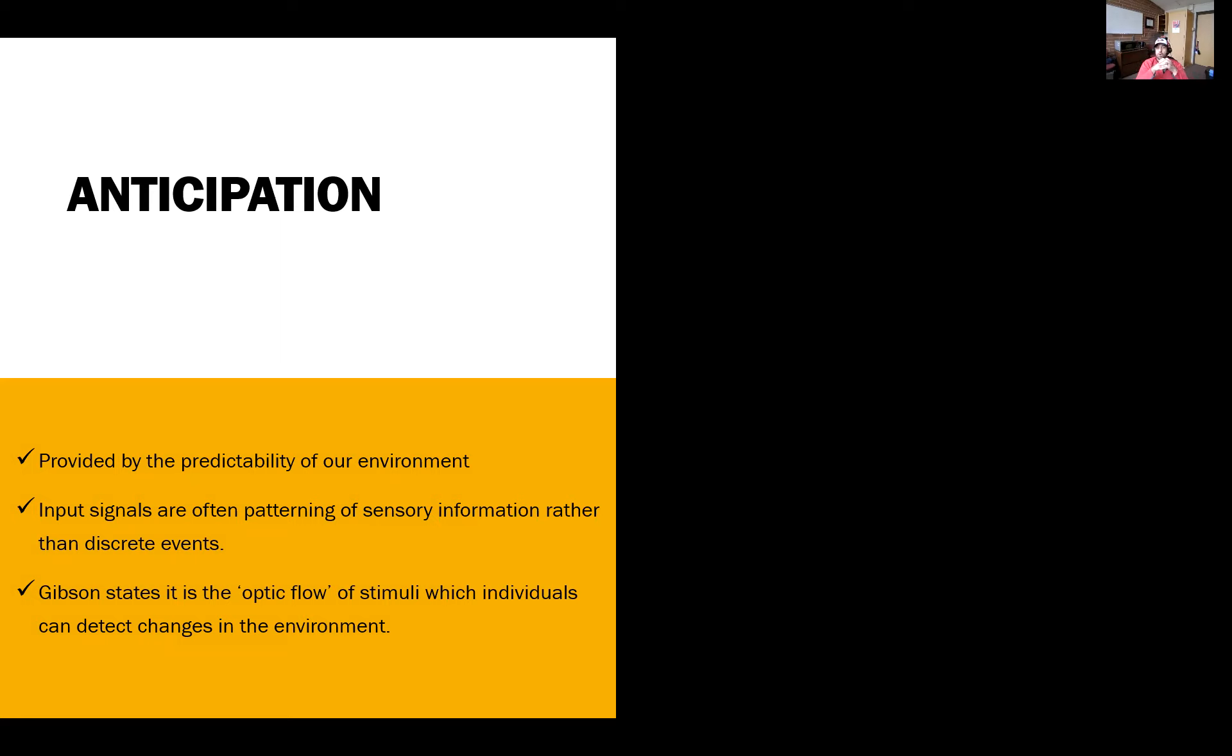The benefits of anticipating enhance the more predictable our environment is. Unpredictability in an environment removes that ability for anticipation. We have some sort of patterning within this environment that provides the ability to anticipate, oftentimes from discrete events. We go back to that optical flow process where individuals can detect changes in the environment. If there's a disruption in the flow of what we're seeing, that provides us a stimulus that creates an influence.